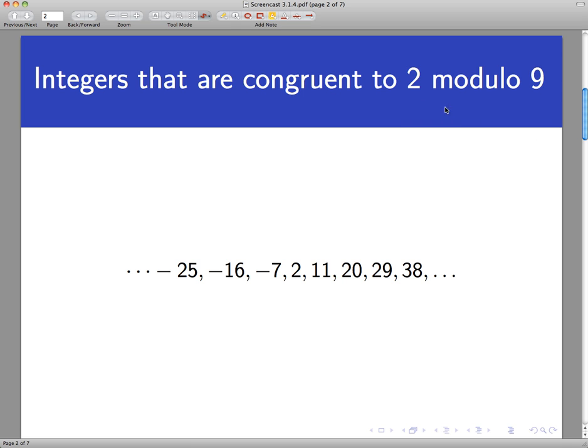For an integer to be congruent to 2 modulo 9, I would have to have 9 dividing the difference between that integer and 2. And any of these in this list suffice. I've added a few more to the list since the concept check. I think we stopped at negative 7 and any of these numbers will work. 38 also works, negative 16 also works.